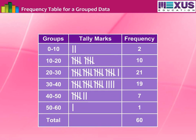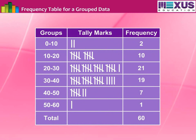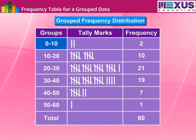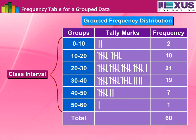Data presented in this manner is said to be grouped, and the distribution obtained is called a Grouped Frequency Distribution. It helps us to draw meaningful inferences, such as: most of the students have scored between 20 and 40, and 8 students have scored more than 40 marks out of 50. Each of the groups — 0 to 10, 10 to 20, 20 to 30, etc. — is called a class interval.